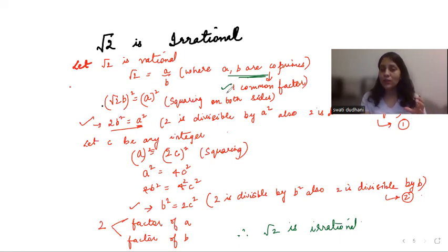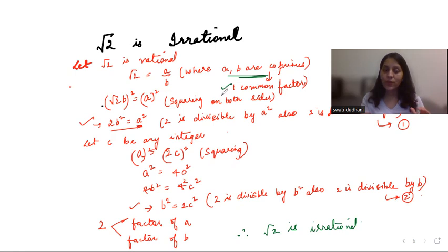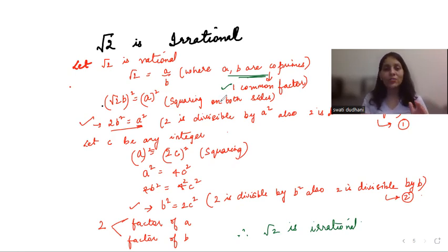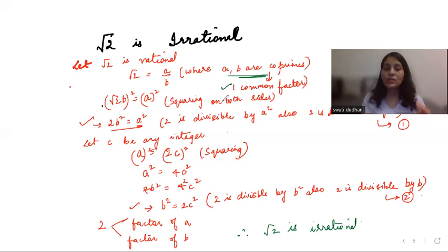In the first attempt you might be confused by the many steps, but if you practice writing this once or twice you will understand each and every step. All similar questions — prove root 3, root 5, root 7 irrational — follow the same procedure. Practice this one because it is a definite question in your board exam. Thank you.